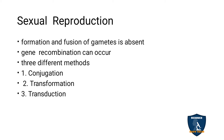In sexual reproduction, as you have studied asexual reproduction, there is no involvement of gametes — only spore formation takes place in asexual reproduction. In sexual reproduction, normally gametes are involved and fusion of gametes results in zygote formation. But in bacteria, no such process takes place; gamete formation or fusion of gametes is absent.